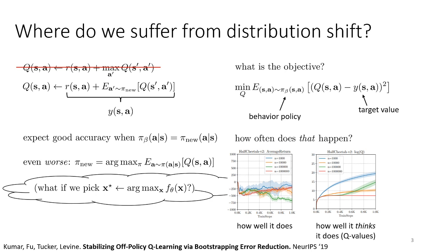When the data isn't changing, the objective for fitting the Q function is the Bellman error in expectation under the behavior policy, approximated by using the samples in D. This means our Q function can be expected to provide accurate estimates in expectation under pi_beta. The problem is that when we perform Bellman backups, we use estimates of the expected value of the Q function under our latest policy pi_nu, and we would expect good accuracy only if pi_nu equals pi_beta.